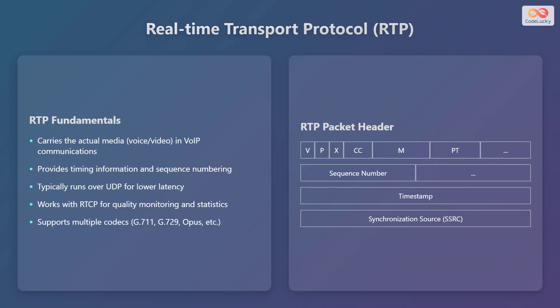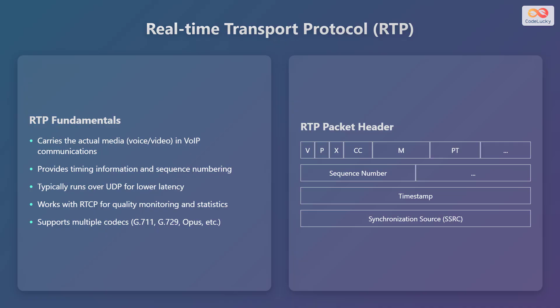The Real-Time Transport Protocol (RTP) plays a crucial role in VoIP communications. It carries the actual media — whether voice or video — ensuring you can hear and see the other person during a call. It provides timing information, making sure audio and video are synchronized properly. It also uses sequence numbering, allowing the receiving end to reassemble packets in the correct order even if they arrive out of sequence. RTP typically runs over UDP to minimize latency, which is essential for real-time communications. It works in conjunction with RTCP for quality monitoring and statistics.